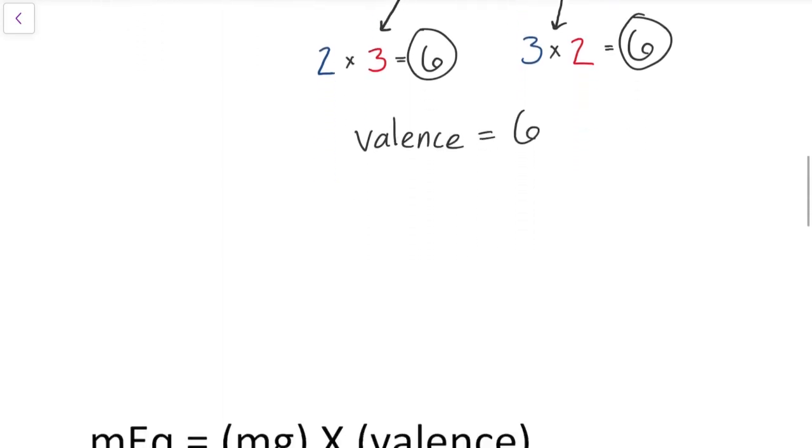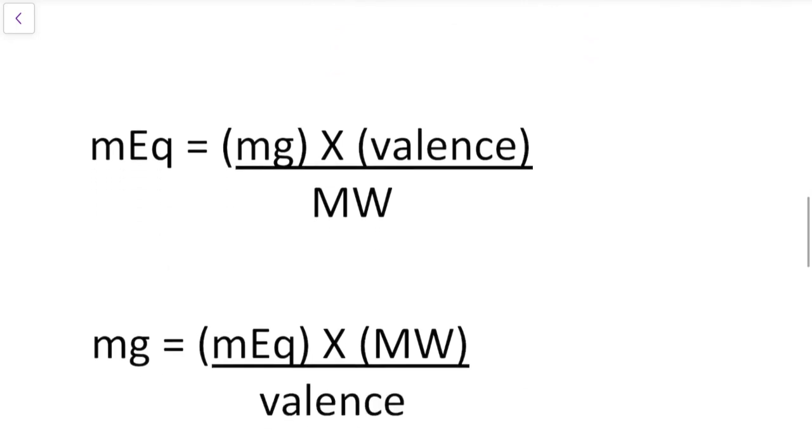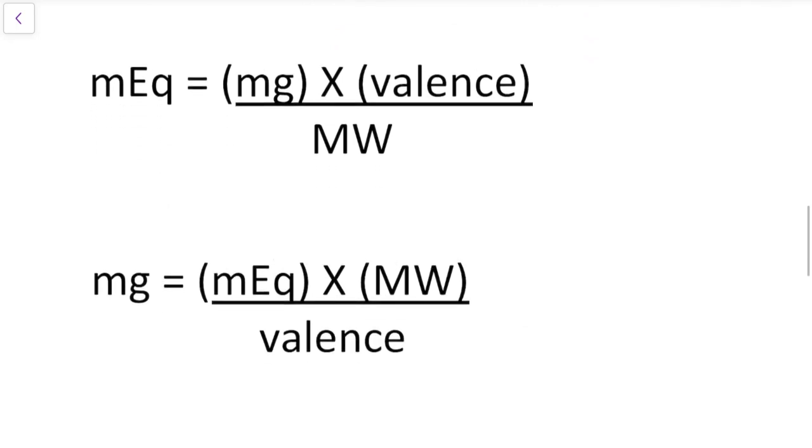Now that we have an understanding of valence, we can calculate the milliequivalence in solution. If you are given a mass of a substance and the chemical formula, you can calculate its valence, as we just discussed, and the molecular weight using the periodic table.